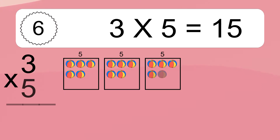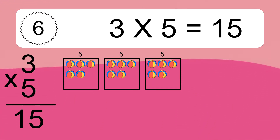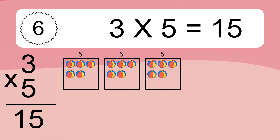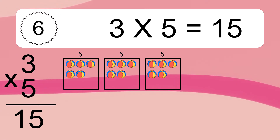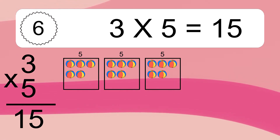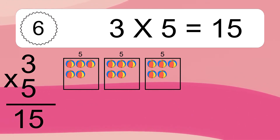3 times 5 equals 15. We have 3 boxes, and each box has 5 colorful balls inside. If you count all the balls in all the boxes together, you will have 3 times 5 balls. This equals 15 balls.